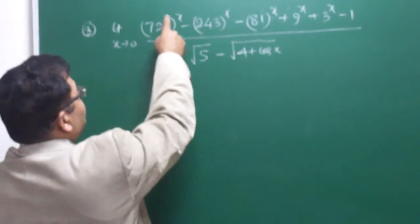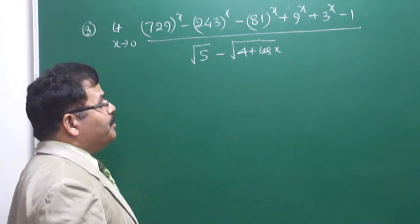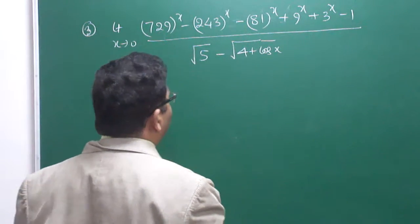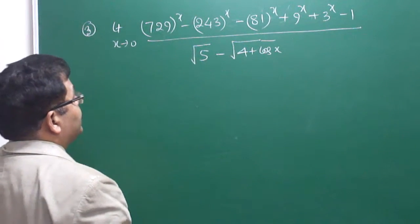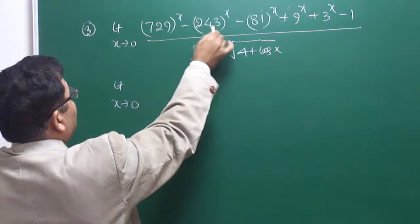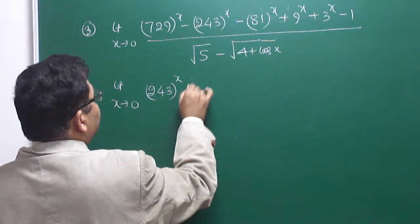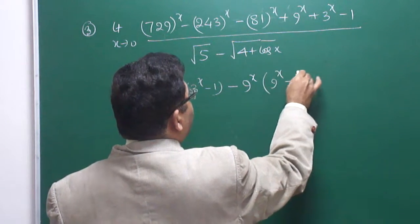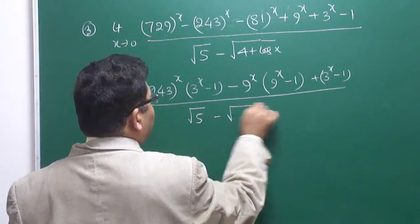If we put x = 0: each exponential term becomes 1, giving three positive and three negative terms — the numerator is 0. In the denominator, cos 0 = 1 and 1 + 4 = 5, so √5 − √5 = 0. So we again have 0/0 form. To solve this, we first make the factors of all terms in the numerator. Taking 243^x common from the first two terms leaves (3^x − 1); taking 9^x common from the next pair leaves (9^x − 1); and a factor of (3^x − 1) is also present in the remaining terms.